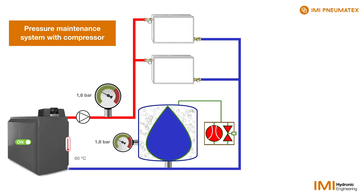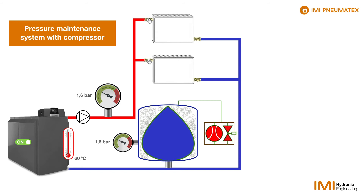If the temperature rises further, the pressure in the system rises and the process starts all over again. The pressure at a system temperature of 60 degrees is, for example, 1.7 bar and the vessel is almost completely full.